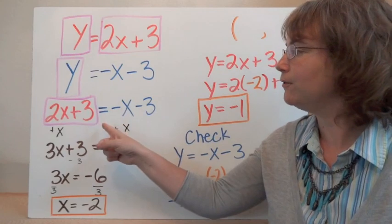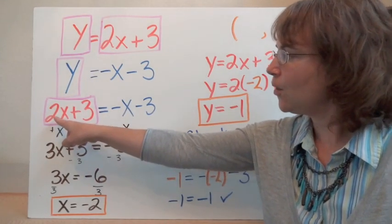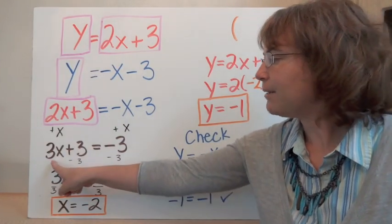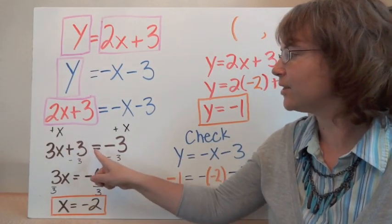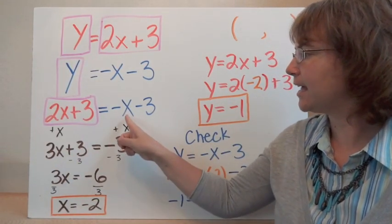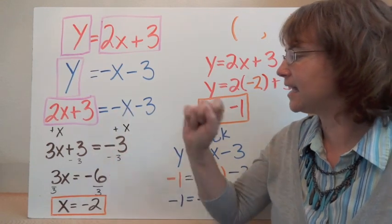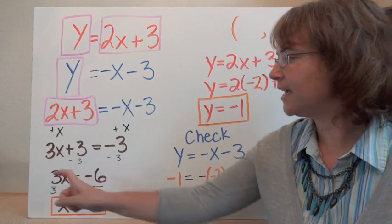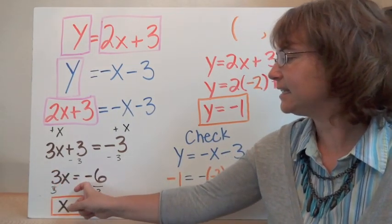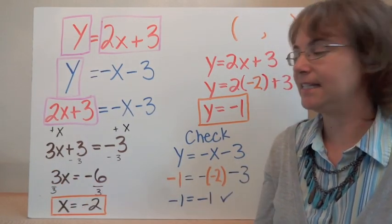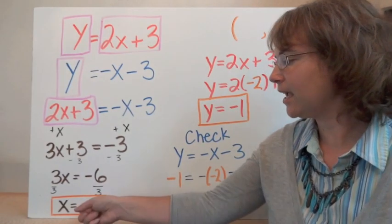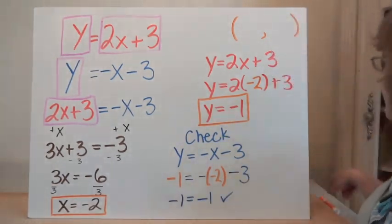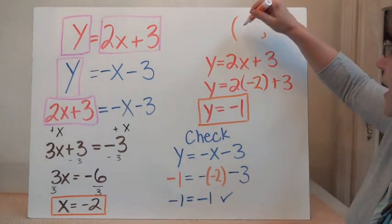And we know how to solve equations with one variable. So we're going to add x to both sides here so we can get our x's all together. We have 3x plus 3 is equal to negative 3. Solving for x, we subtract 3 from both sides and we have 3x is equal to negative 6. Divide both sides by 3 and we have our x coordinate: x is equal to negative 2. That's our first coordinate.